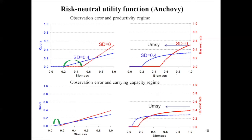With observation error, the optimal rule is to open the fishery at a lower stock size but fish at a lower rate. With a regime shift in carrying capacity, the same situation occurs: both Bmin and Qslop decreased, but the fishery is opened at a lower stock size compared with the regime shift in productivity. Therefore, for an optimal scaling rule, the minimum stock size needs to be more conservative under regime shifts in productivity. The plots on the right show the harvest rate produced without observation error.